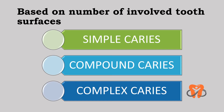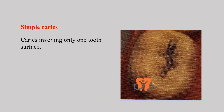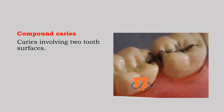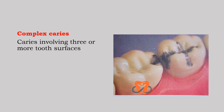Based on the number of involved tooth surfaces, we have simple, compound, and complex caries. Simple caries involves only one tooth surface — here caries is present only on the occlusal surface. Compound caries involves two tooth surfaces — you can see both the occlusal surface and the proximal surface are involved. Complex caries involves three or more tooth surfaces — here the occlusal surface, the mesial proximal surface, and the lingual surface are all involved.